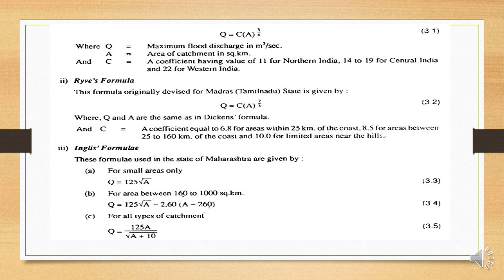Next is Ryve's formula, which is derived for the Madras (Tamil Nadu) state. Because different areas have different rainfall, this formula is different. Ryve's formula is Q = C × A^(2/3). Here Q is maximum flood discharge, A is area of catchment, and C is a coefficient. C = 6.8 for area within 25 km of the coast; C = 8.5 for area between 25 to 160 km from the coast.